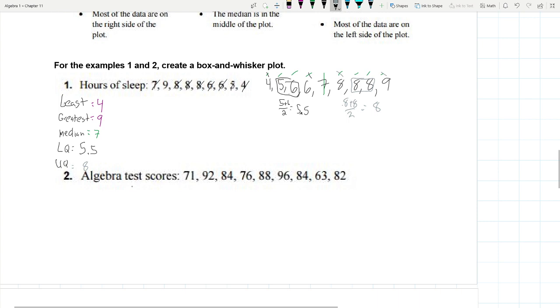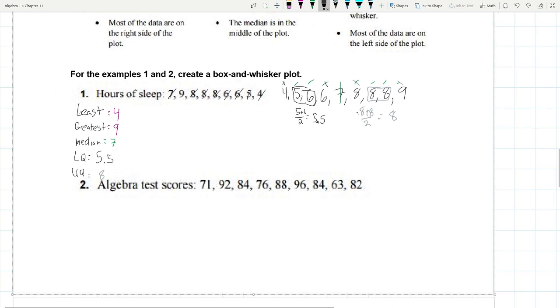I have my five number summary. I have the five numbers that I need in order to make this. So let's go ahead and make a number line. Let me try to get a nice long line here.